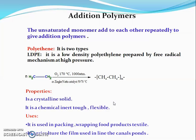Low density polyethylene is also prepared by a free-radical type of mechanism at high pressure. These polymers contain branches in the polymer chain and can be used in various ways.